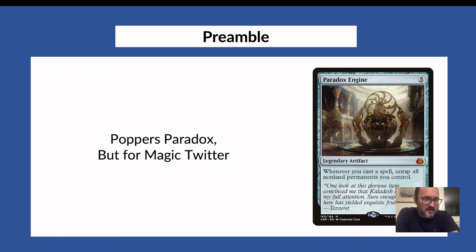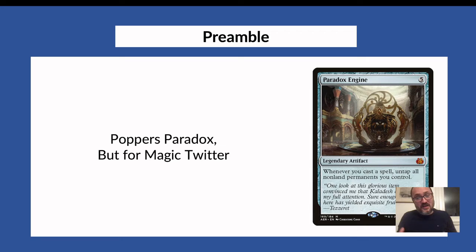Popper's paradox is the idea that in a tolerant society, people who think tolerance is the enemy should be excluded from the tolerance rule. The same applies in democracy — people whose only goal is to take over power and remove democracy should be excluded from the democratic process, because their aim is to remove the very thing the society is based on.